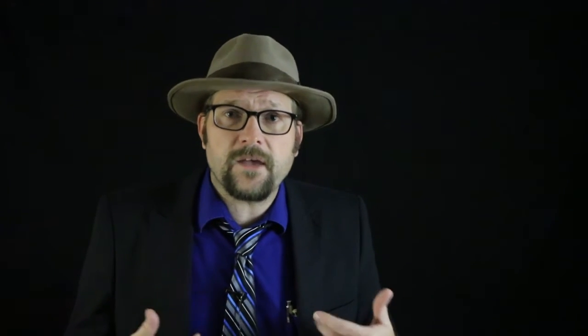The next two types of fish scales are collectively called the elasmoid scales. Elasmoid scales lack the thick covering of ganoine and hence are more slender, but still provide some protection to the fish.